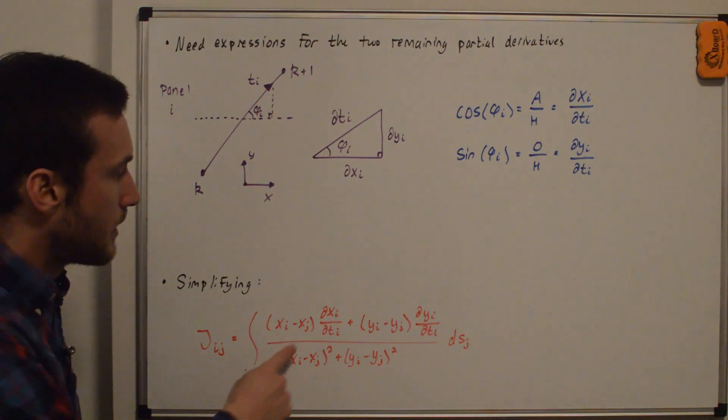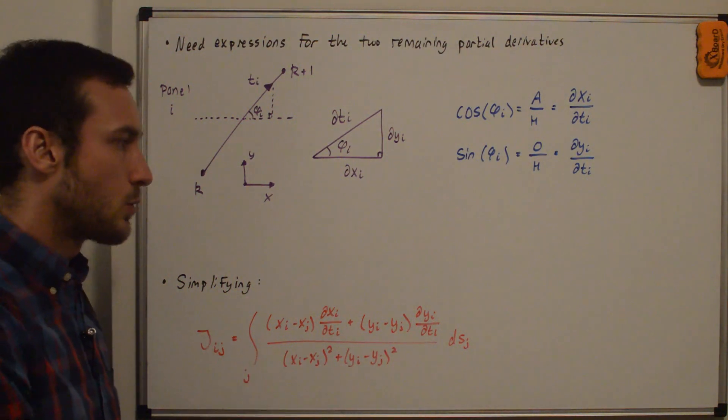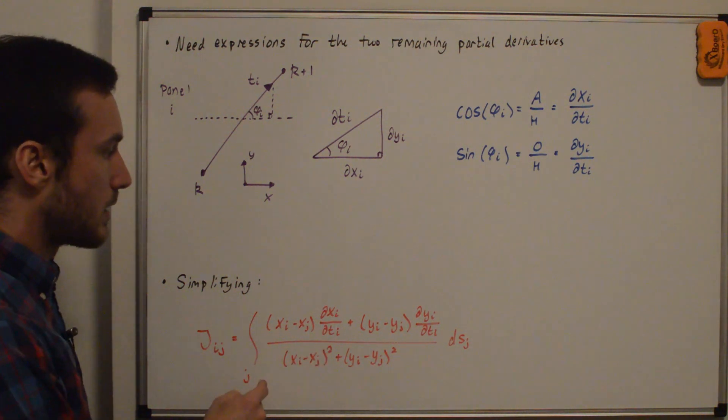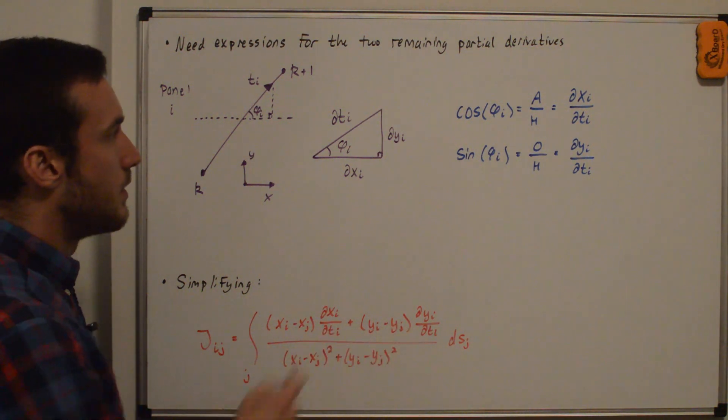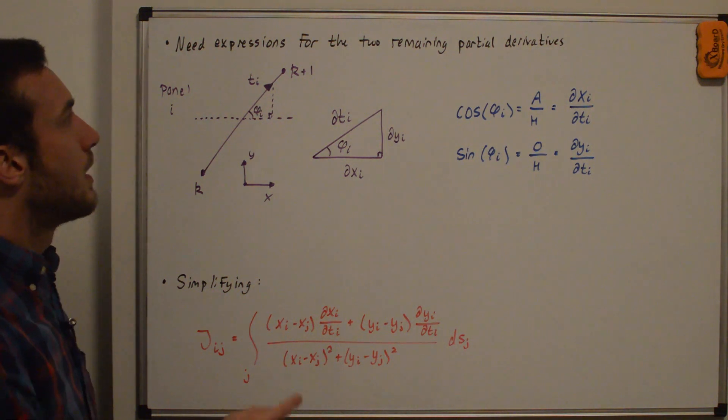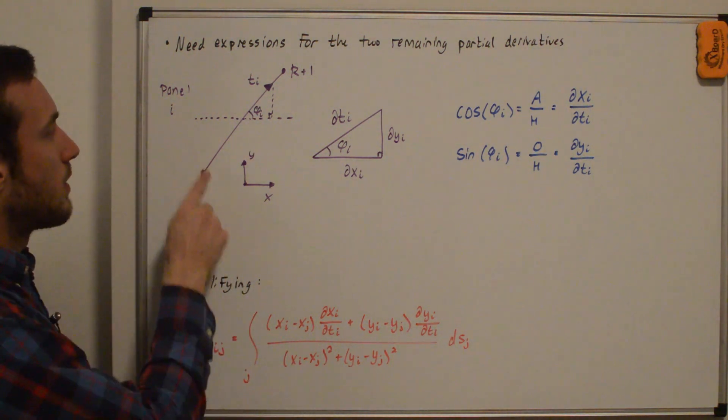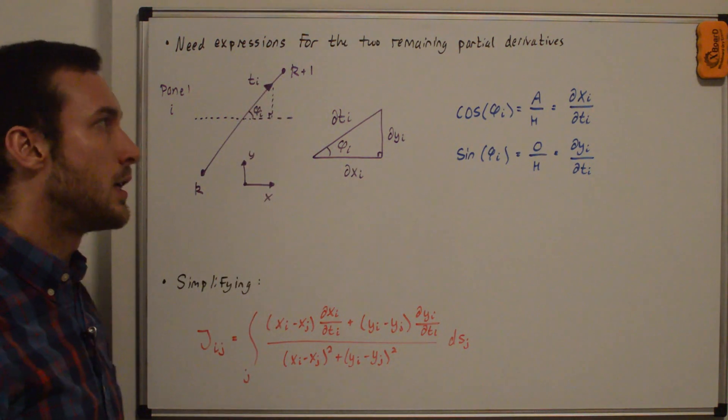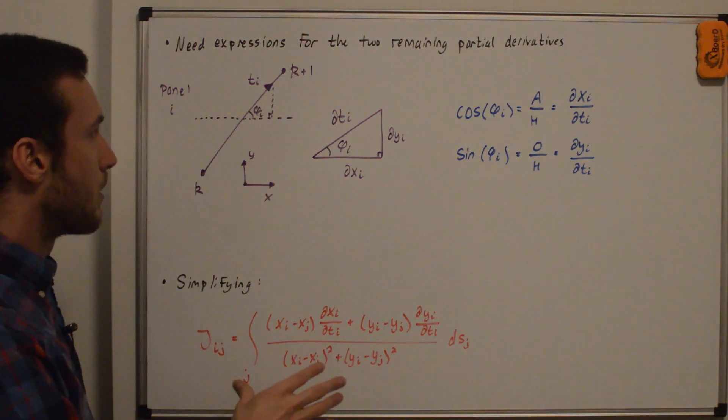And now you'll note in this equation that we still have two partial derivatives. And so we've been moving towards a result where we don't have any more partial derivatives. So we can start to integrate this. So we need to evaluate these two. And so for that, I'm going to take a look at a panel here, panel i, that's going from index k to k plus one. I'm just using k because i and j are taken up by other variables down here.